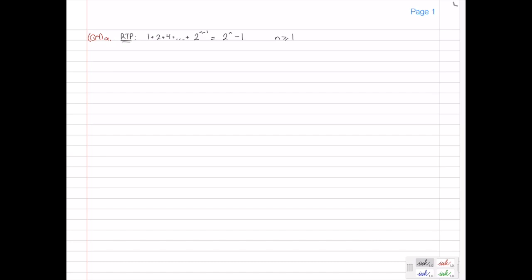So we want to prove it for all n greater than or equal to 1. That means n equals 1 is our base case. So we have to check n equals 1. The left hand side will become 2 to the power of 1 minus 1, which is just 2 to the 0, which is 1.